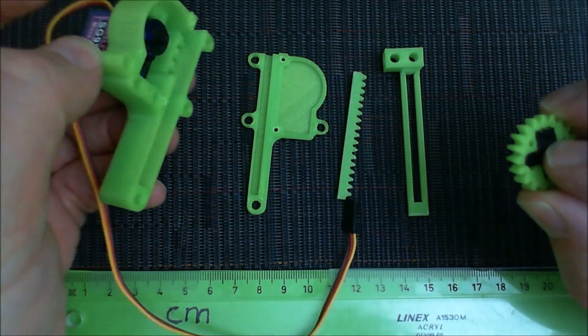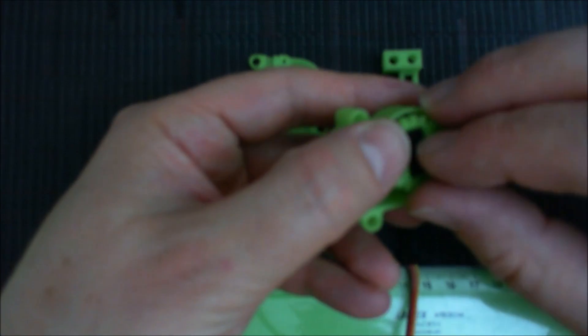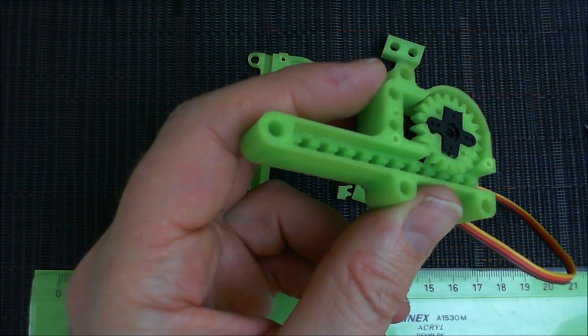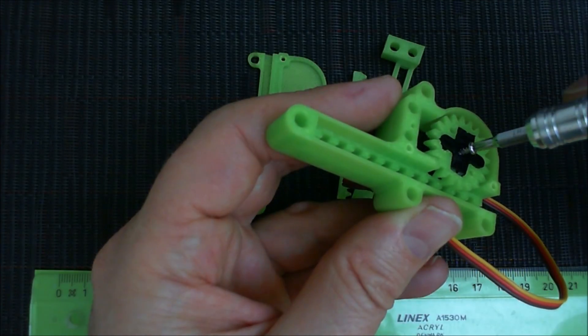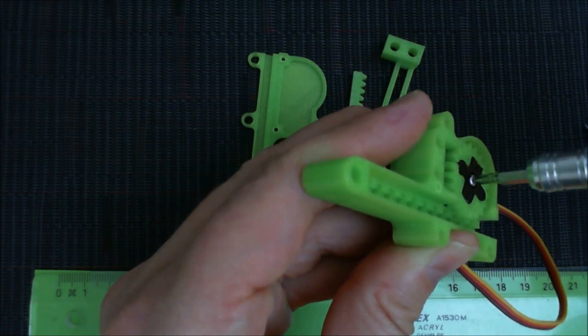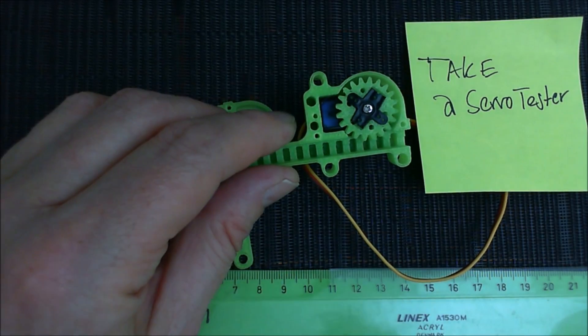So you want to put it in here. Now take the tiny screw here and attach it in the servo tester.